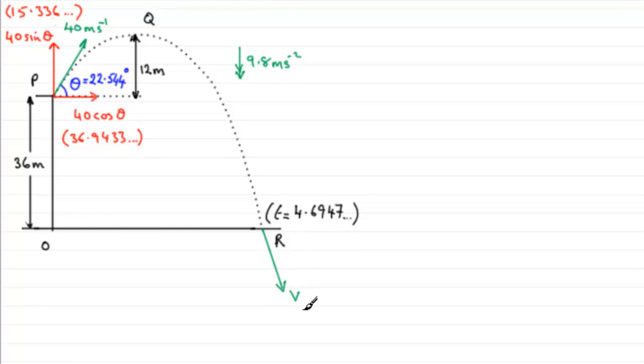There are two ways we can get this speed v. We can think of splitting it up into two components - the one that's acting horizontal and the one that's going downwards. The horizontal component is going to always be constant, which would be 36.943 and so on.